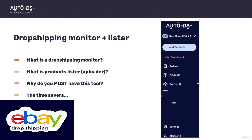Now let's talk about what a products lister is. The monitor shows all of your active listings from your store. The uploader, or lister, is something that with one click copies all the details from your supplier's page — title, images, description, item specifics, shipping times, and everything — directly into your monitor system, AutoDS. Instead of copying everything manually, the tool automatically takes the entire product page from AliExpress or any other supported supplier.